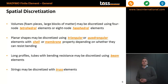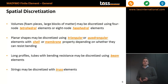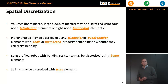The spatial discretization of solid structures depends on the nature of the structure. For volumetric structures, you can use tetrahedral or hexahedral elements. For more planar shapes, you can use triangular or quadrangular elements, which can then have a shell or membrane property depending on whether they can resist bending or not.